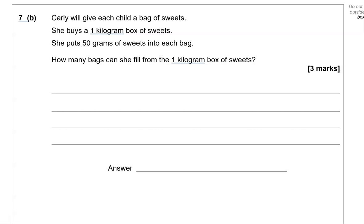Carly will give each child a bag of sweets. She buys a 1 kilogram box of sweets. She puts 50 grams of sweets into each bag. How many bags can she fill from the 1 kilogram box of sweets? So first of all we need to recall how many grams there are in 1 kilogram. And the clue is in the word. So when you say kilogram KG, K stands for 1,000 even in everyday life. So there are 1,000 grams in 1 kilogram.